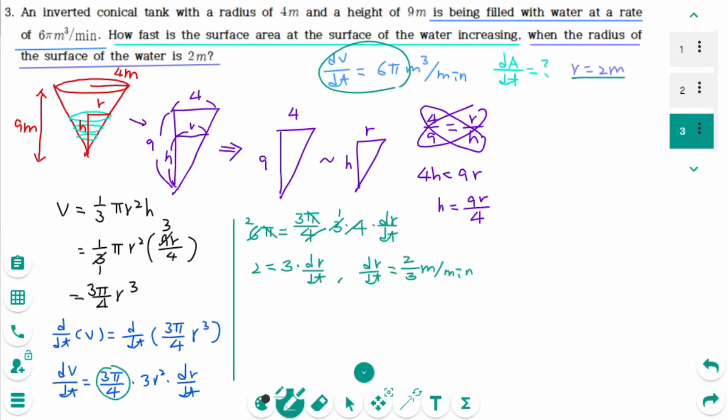When the water is viewed from above, the surface is in the shape of a circle. So the formula for the area of the circle is A equals πr².